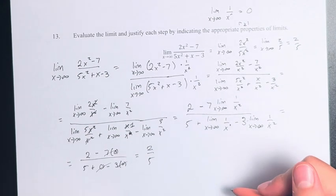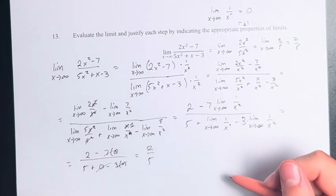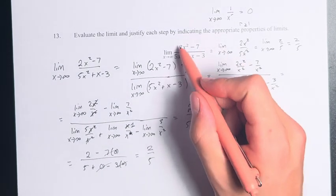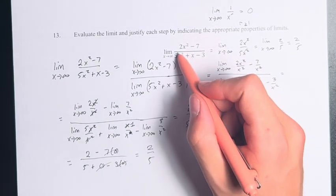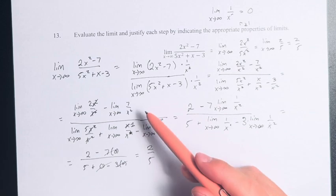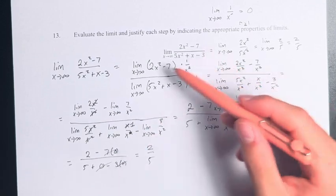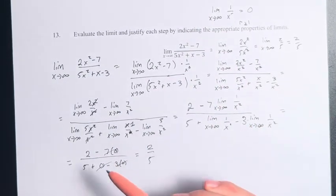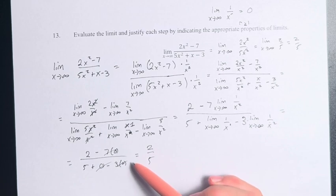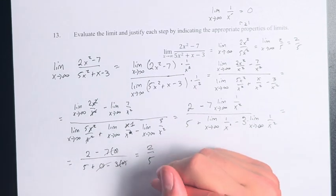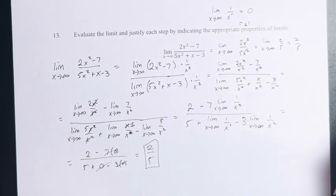And this is the reasoned-out way of saying that the only thing that matters is the x squared term, because when we do it this way, the x squared terms — the 2 and the 5 — are the only things left that don't turn to 0. Either way, we find that the limit is equal to 2 fifths.